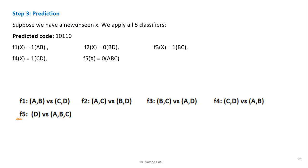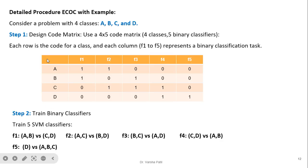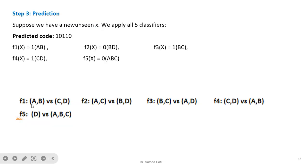For a new unseen sample x, we apply all five classifiers and get the output: 1, 0, 1, 1, 0. This means: classifier 1 predicts A/B (1); classifier 2 predicts B/D (0); classifier 3 predicts B/C (1); classifier 4 predicts C/D (1); classifier 5 predicts A/B/C (0). One represents the positive class and zero represents the negative class in each binary task.